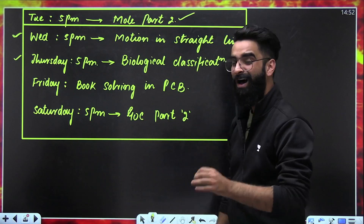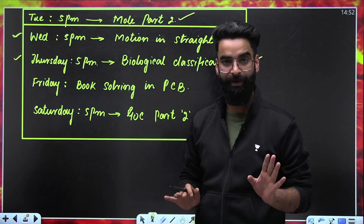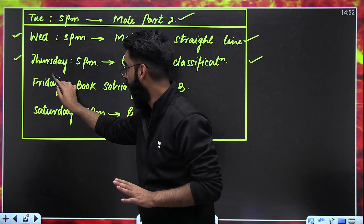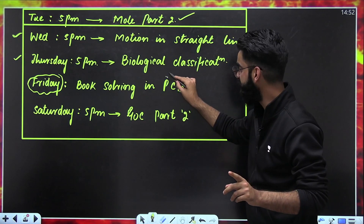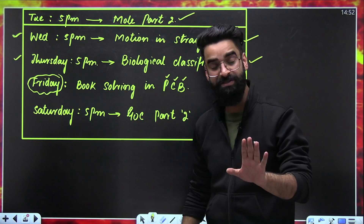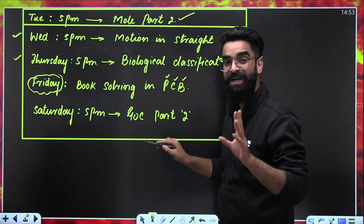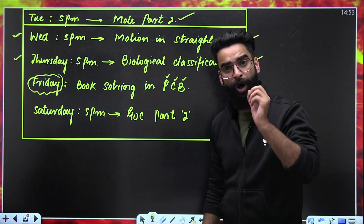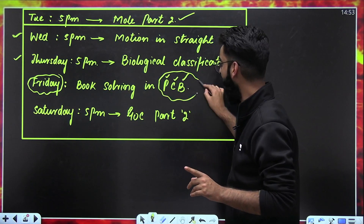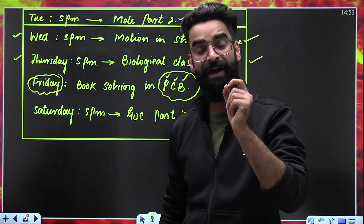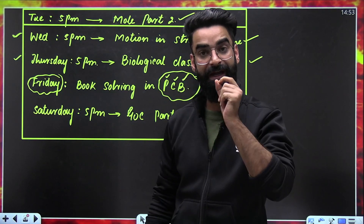Apart from that, on Thursday, Ambika ma'am is going to take the biological classification chapter at 5 pm — again a detailed marathon in which the chapter will be done. Then on Friday, there won't be a marathon, but there will be 3 sessions — one for physics, one for chemistry, one for biology. For example, I'm done with the mole concept chapter, so I will be solving all the questions from N Awasthi from that chapter. Similarly Shreysar, done with vectors and motion in straight line, will be doing all the questions from DC Pandey for those 2 chapters. Ambika ma'am will do the same for biology. Physics session on Friday at 5 pm, chemistry session at 7 pm, and biology session at 9 pm. And on Saturday, HSPSR is going to complete the whole GOC.